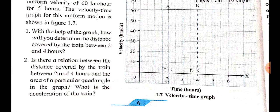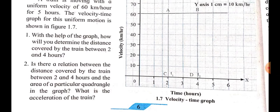The next question is: is there a relation between the distance covered by the train between 2 and 4 hours and the area of a particular quadrangle in the graph? The graph shows quadrangle ABDC. A quadrangle is a mathematical shape having four sides, and this quadrangle is nothing but a rectangle.